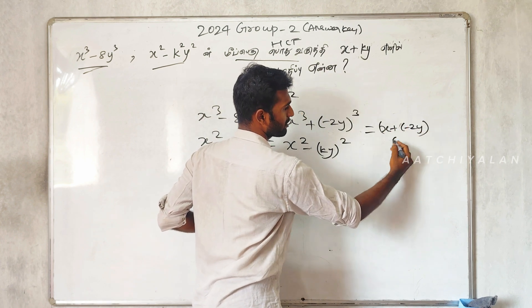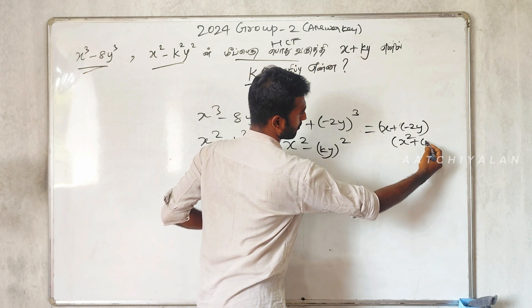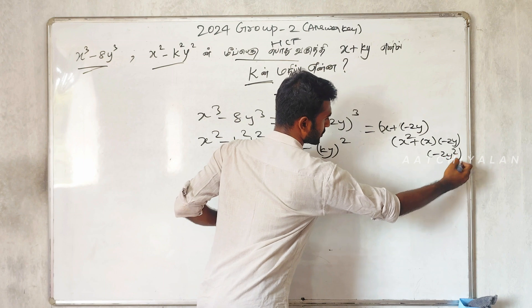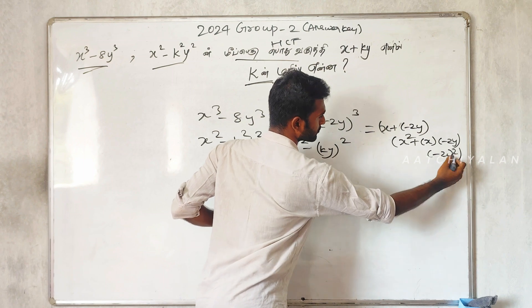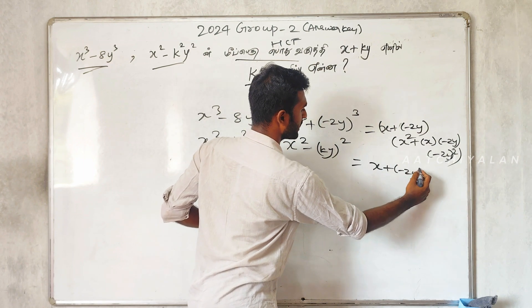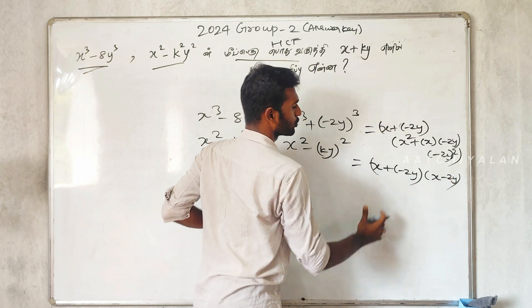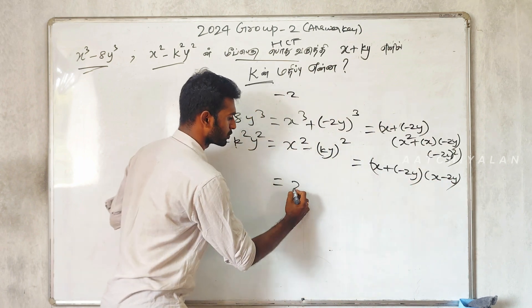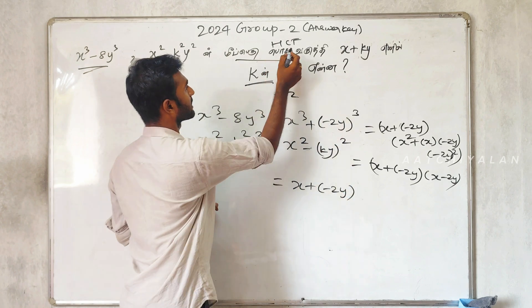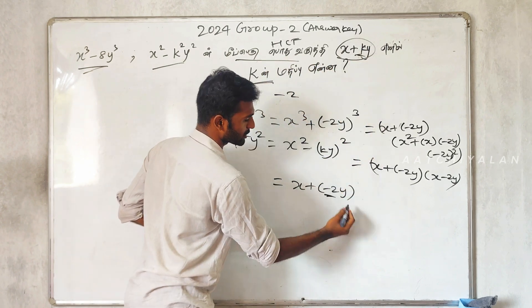Using the (a minus b) formula: x squared minus 2xy minus 2y squared. The formula gives x plus minus 2y, which equals x minus 2y. So x plus ky, meaning k value is minus 2.